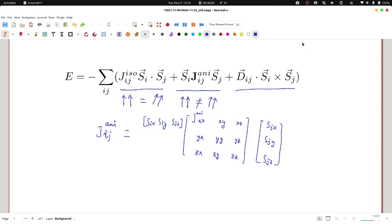This term is also called symmetric anisotropic exchange because the parameter is equal to its transpose, and we also have J_ij equals to J_ji.